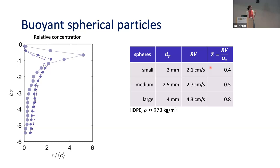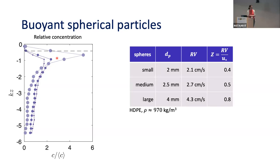We can do these experiments, vary the particles and waves, and test different models. What we're looking at here is the equilibrium concentration of three particles under the same conditions at low, medium, and high Rouse number — small, medium, and large particles. We see results we might expect: the smallest particles show a rather well-mixed concentration profile, and the largest ones show this exponential decay. We have some distortion near the free surface because there's a wave, so a dashed line marks the lowest wave trough.